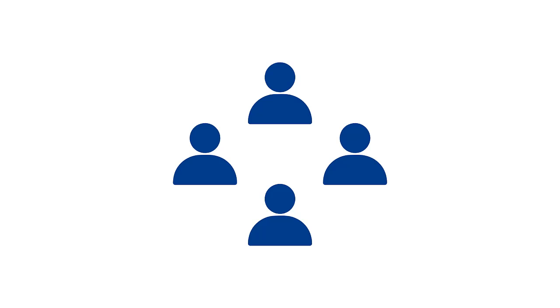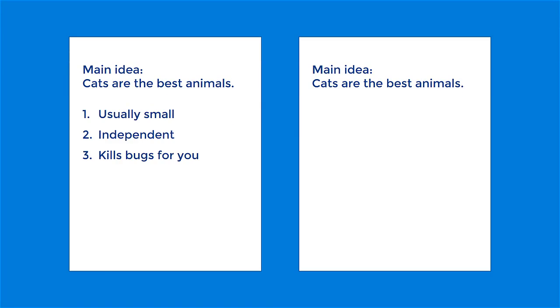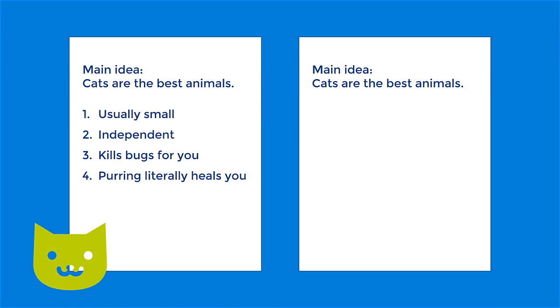The first step to having a cohesive group project is to make sure each group member agrees on the main idea or argument. It's important to all agree on the main point so that one section of the project doesn't have a lot of side tangents in it. You want your paper to be like this — not like this.